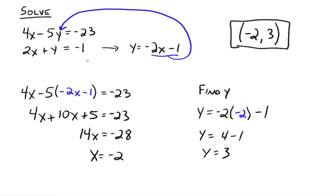If we were to graph both equations — 4x plus 5y equals negative 23 and 2x plus y equals negative 1 — they would intersect at the point negative 2, 3. Remember, the first method was solving systems by graphing, where you graphed each equation and found where they intersected. The problem with that is sometimes the answer might be something like 1 half and 7 eighths, which is harder to see on a graph. The substitution method gives us an algebraic way to find the exact solution.